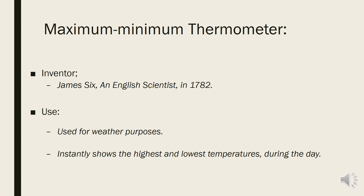Today we shall discuss the working of a maximum minimum thermometer. The maximum minimum thermometer was invented by James Six, an English scientist, in 1782. It is also called the Six thermometer, after its inventor.